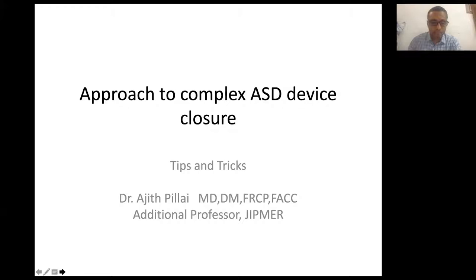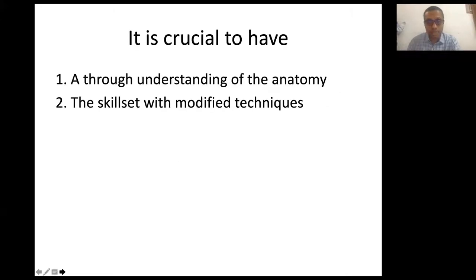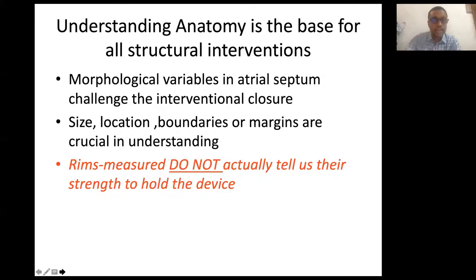We'll be talking about tips and tricks of ASD closure. It is crucial to have a thorough understanding of the anatomy, and we need the skill set with modified techniques for a successful intervention. Understanding anatomy is the base for all structural interventions, and ASD being the first structural intervention to come into the cath lab is no exception. Understanding the anatomical nuances of a septal defect is very important for a successful intervention. Morphological variables in the atrial septum do challenge interventional closure.